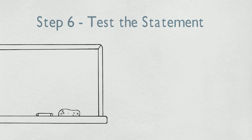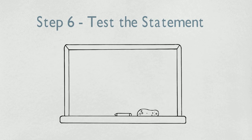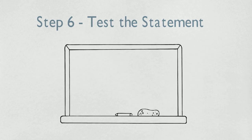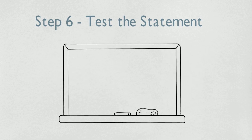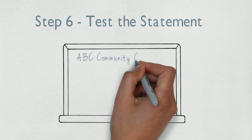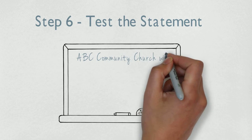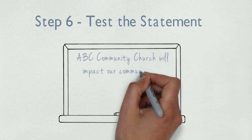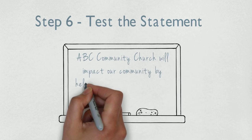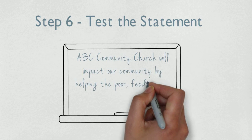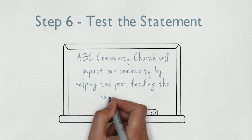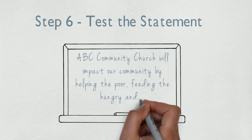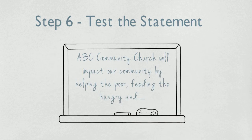Step number six: test the vision statement. Read the statement and determine whether the entire group agrees that the statement reflects a common direction and describes a picture of an ideal future state of the church. If time is limited, ask a subgroup to fine-tune the statement for review at the next meeting of the group.